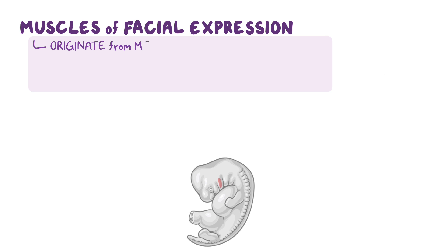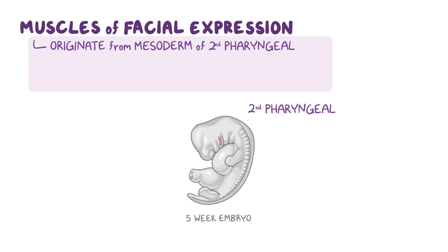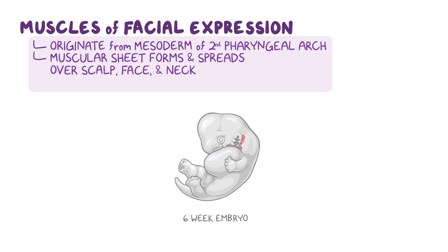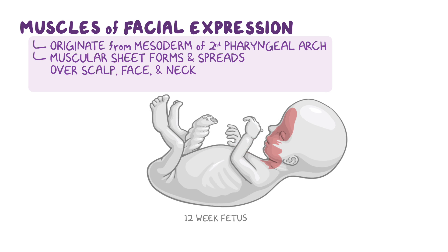All facial muscles originate from the mesoderm of the second pharyngeal arch, along with the facial nerve. During embryological development, a muscular sheet forms and begins to spread over the scalp, face, and neck, which later forms the facial muscles. This spreading carries the branches of the nerve of the second arch with it, which is the facial nerve, or cranial nerve 7.